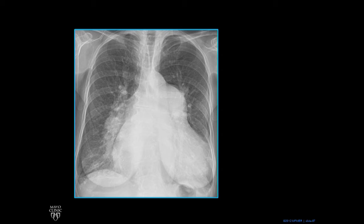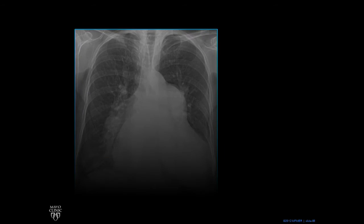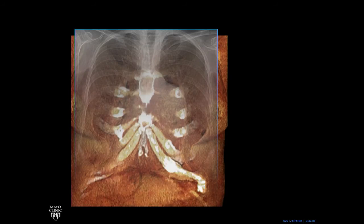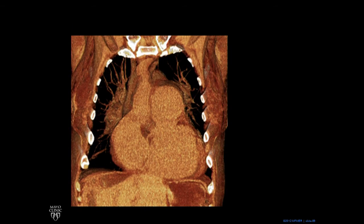Here's another abnormal case — another person with pulmonary artery hypertension who also had tricuspid regurgitation, meaning regurgitation of the valve between the right atrium and the right ventricle. That gives you a big right atrium. If we peel back the CT scan, you can see that the right border is made by the right atrium.